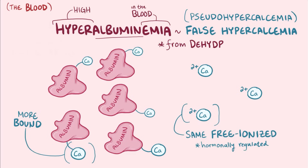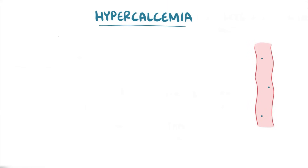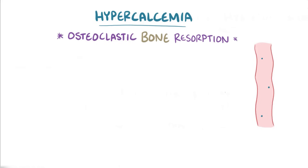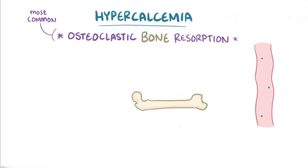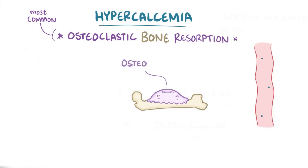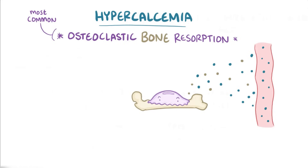Even though this is rare, it can happen in people with dehydration, where albumin gets really concentrated. Now true hypercalcemia might be caused by increased osteoclastic bone resorption, which is actually the most common cause, and this is where osteoclasts — little bone-eating cells — frantically break down the bone and release calcium into the blood.